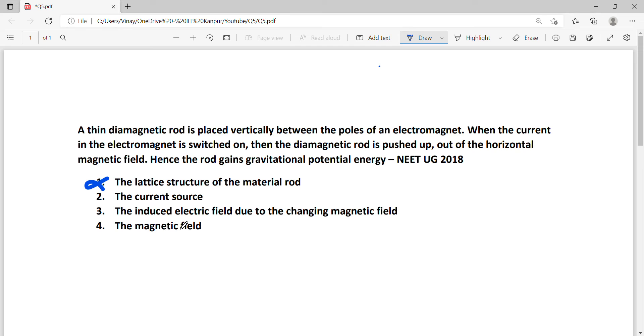The third option says induced electric field due to the changing magnetic field. But it is not so, because the magnetic field is being generated due to the current that is switched on in the electromagnet.